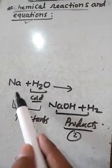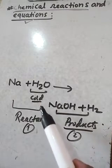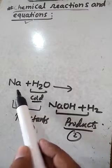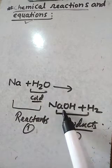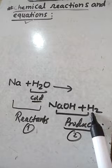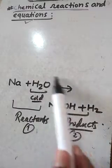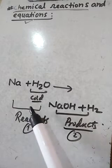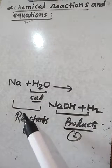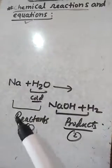In this reaction we see that the symbol of sodium is Na, the formula of water is H2O, this is sodium hydroxide NaOH, and this is the formula of hydrogen gas H2. With the help of symbols and formulas, a chemical reaction expressed in terms of symbols and formulas is called a chemical equation.